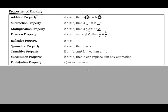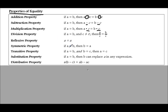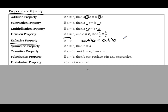Students will often get reflexive property confused with symmetric property. Reflexive property is when you have exactly the same thing on both sides of an equation. So if I had a plus b equals a plus b, that's the reflexive property. It's like when you look in a mirror and get your reflection — it's exactly the same thing on both sides of the mirror and where you're standing.